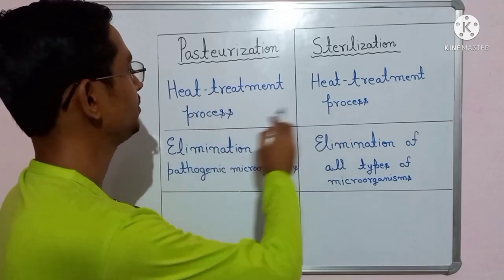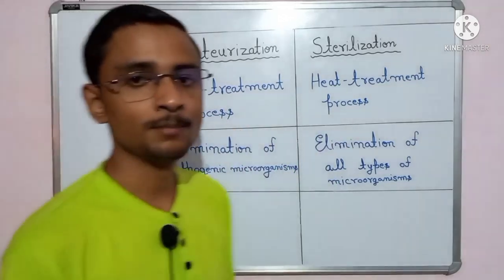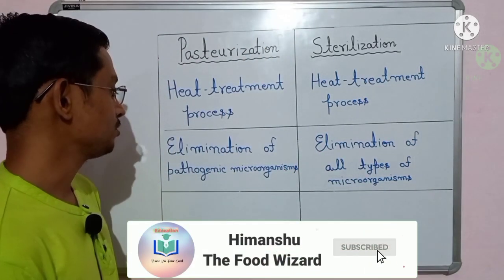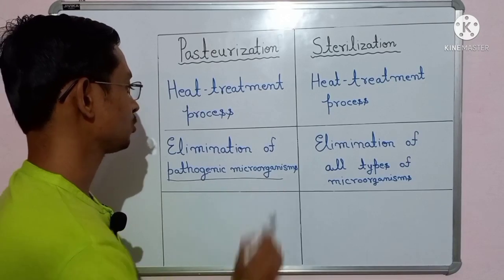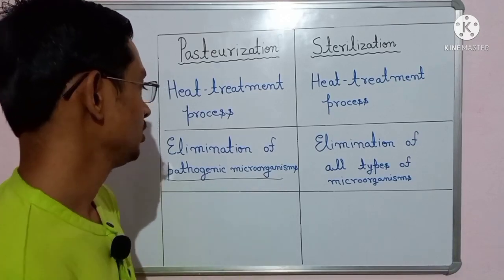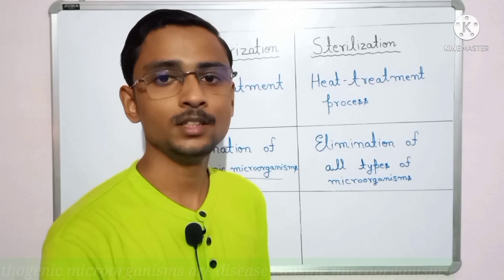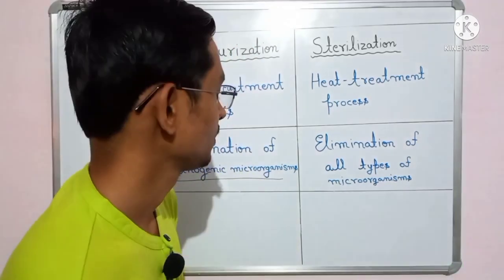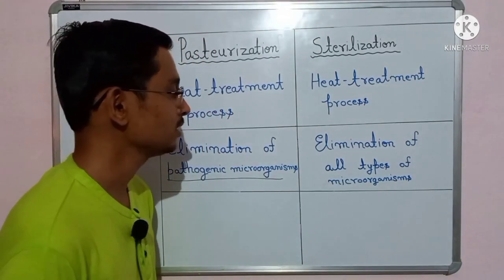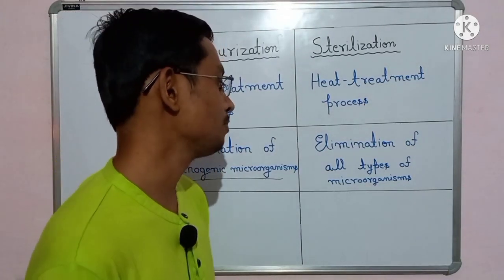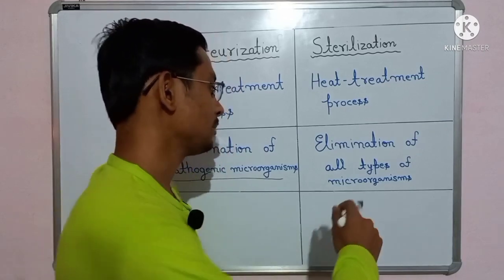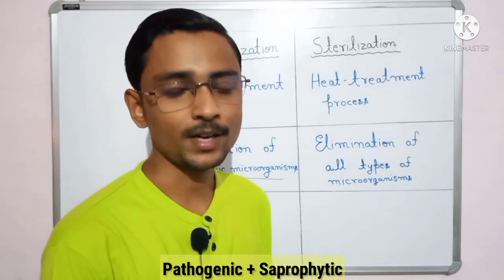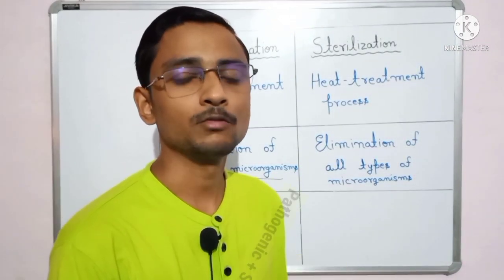Both are heat treatment processes — both require heating. The aim of pasteurization is to kill pathogenic microorganisms — disease-causing microorganisms. On the other hand, sterilization means elimination of all types of microorganisms, which includes pathogenic plus saprophytic microorganisms as well as their spores.